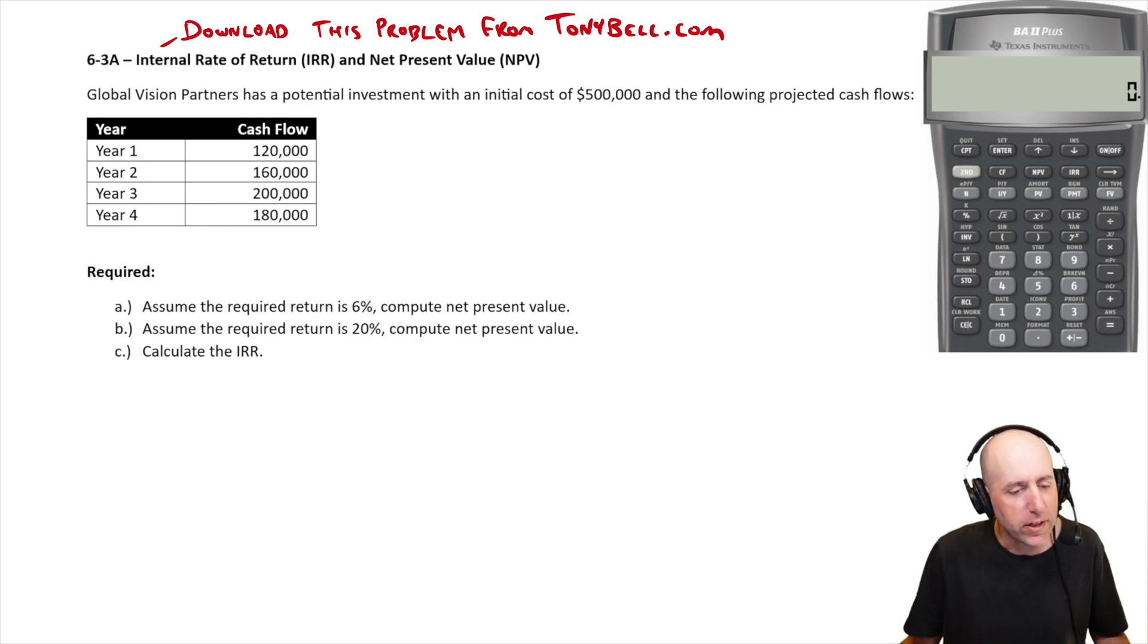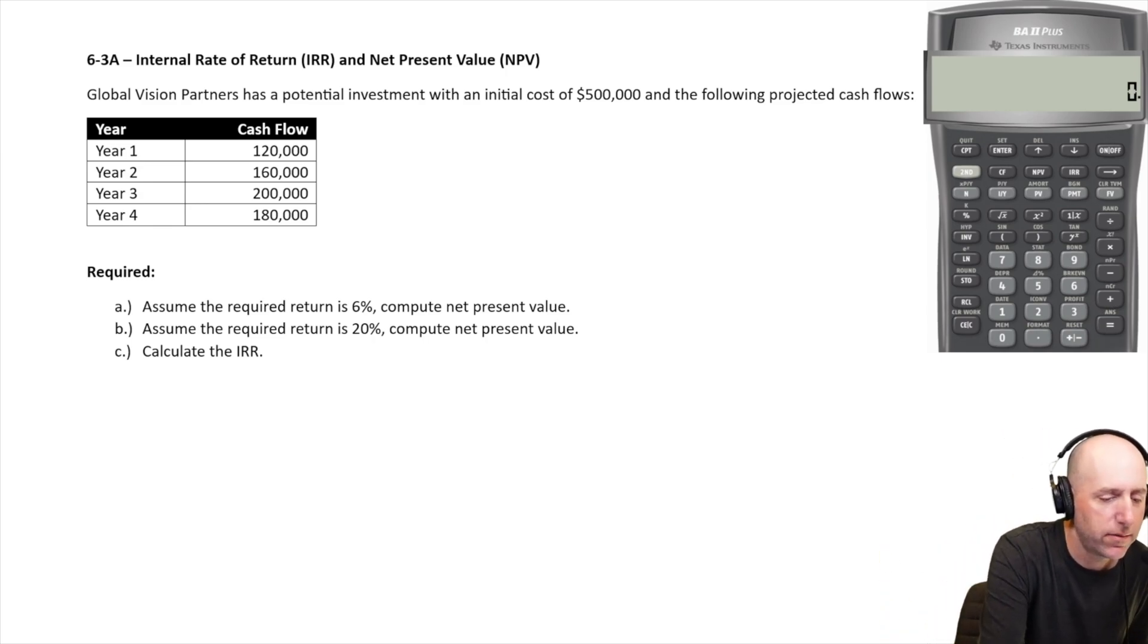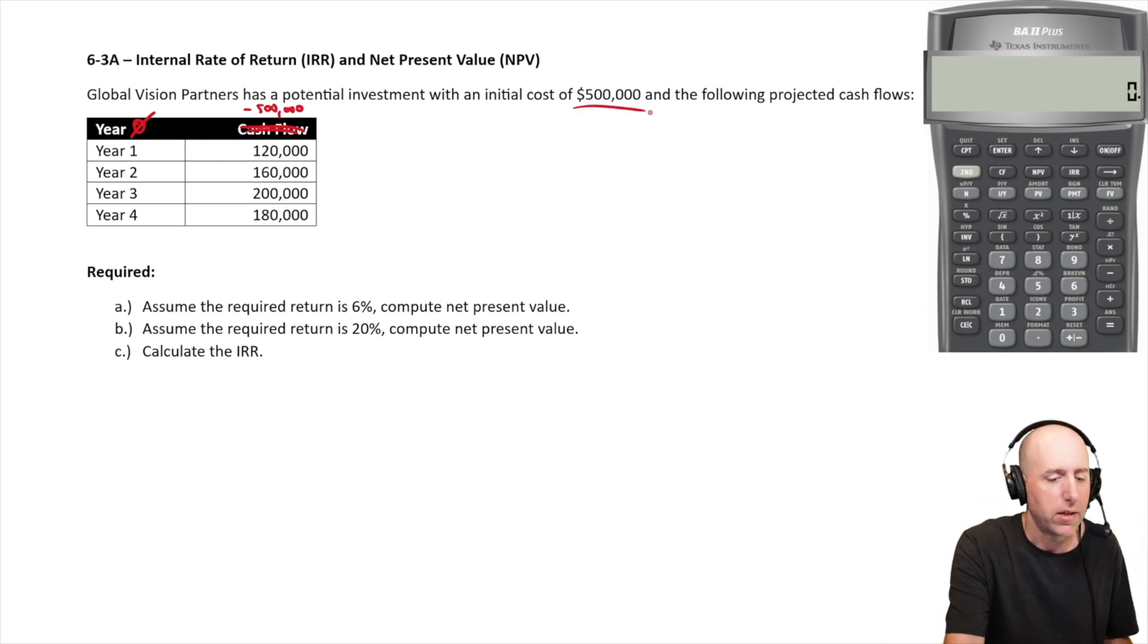So Global Vision Partners has a potential investment with an initial cost of $500,000 and the following projected cash flows. When we're thinking about cash flows, we actually have another cash flow at year zero that's not on this list, and the year zero cash flow is $500,000 negative, our initial investment. You can see 120, 160, 200, 180.